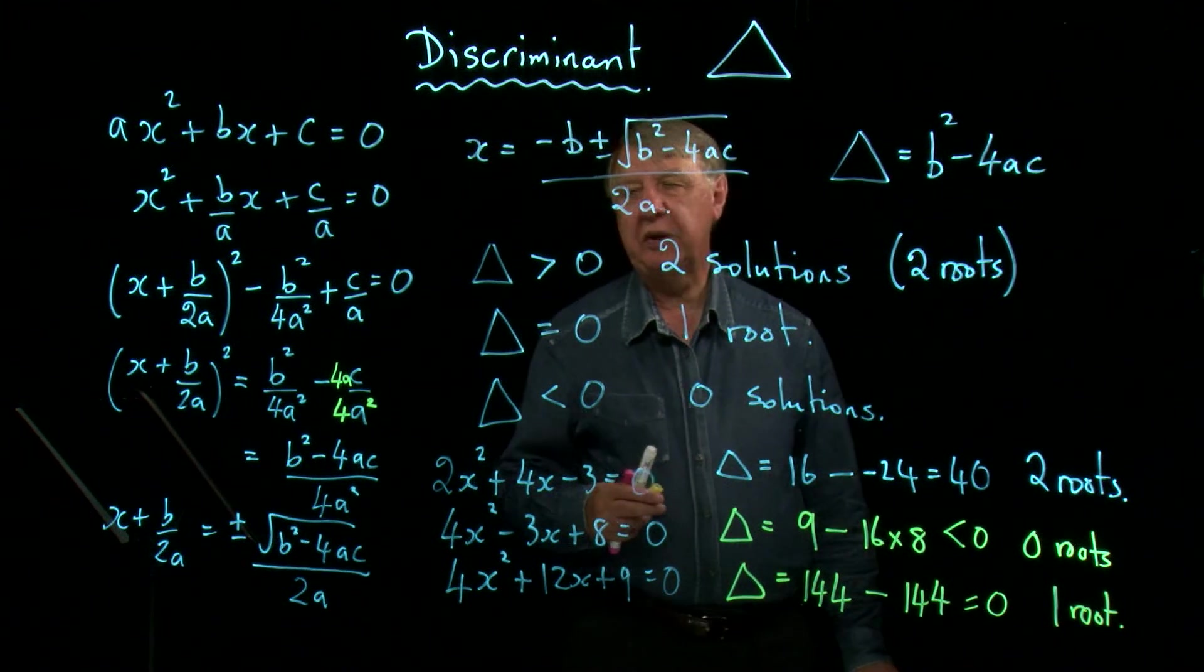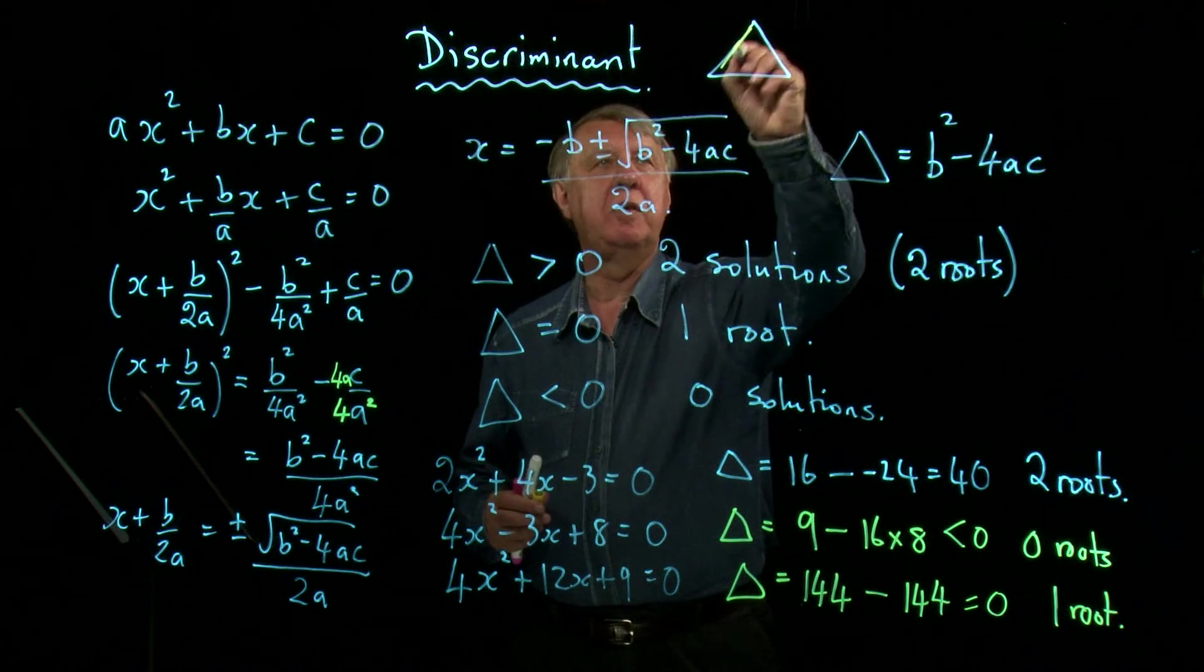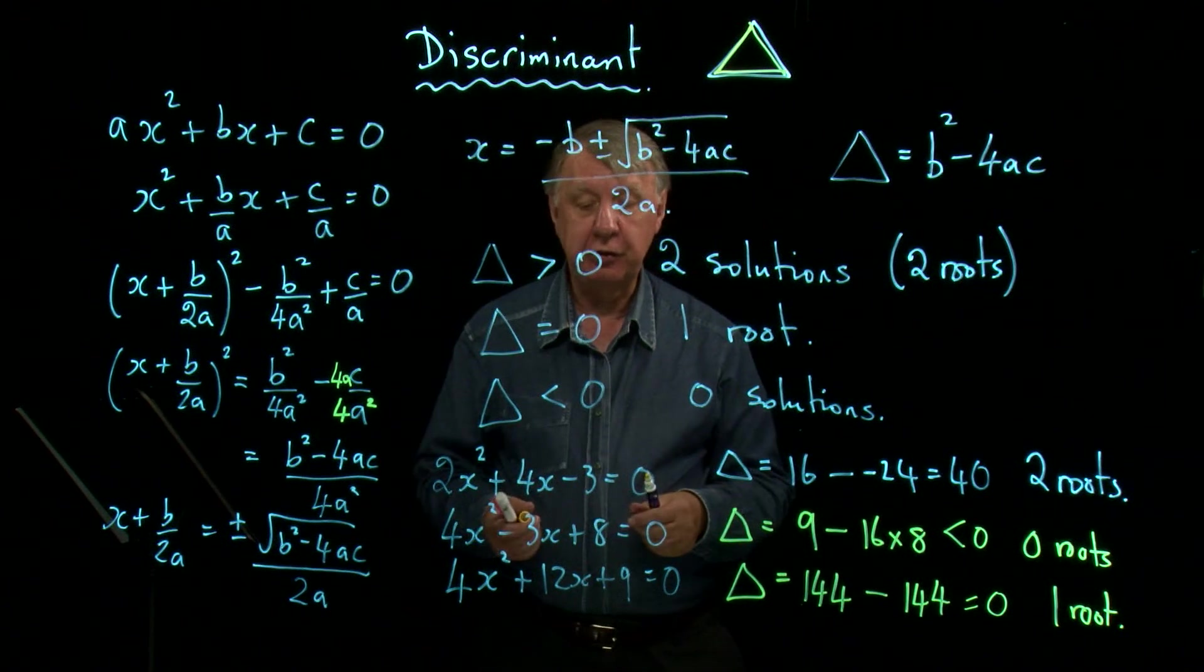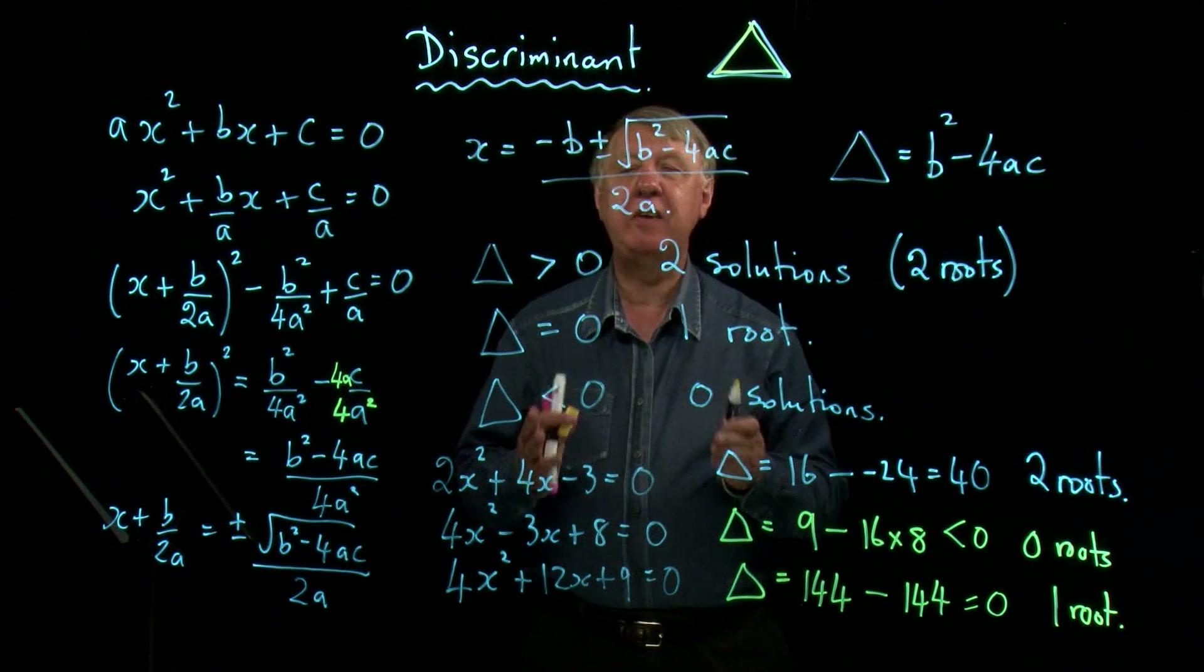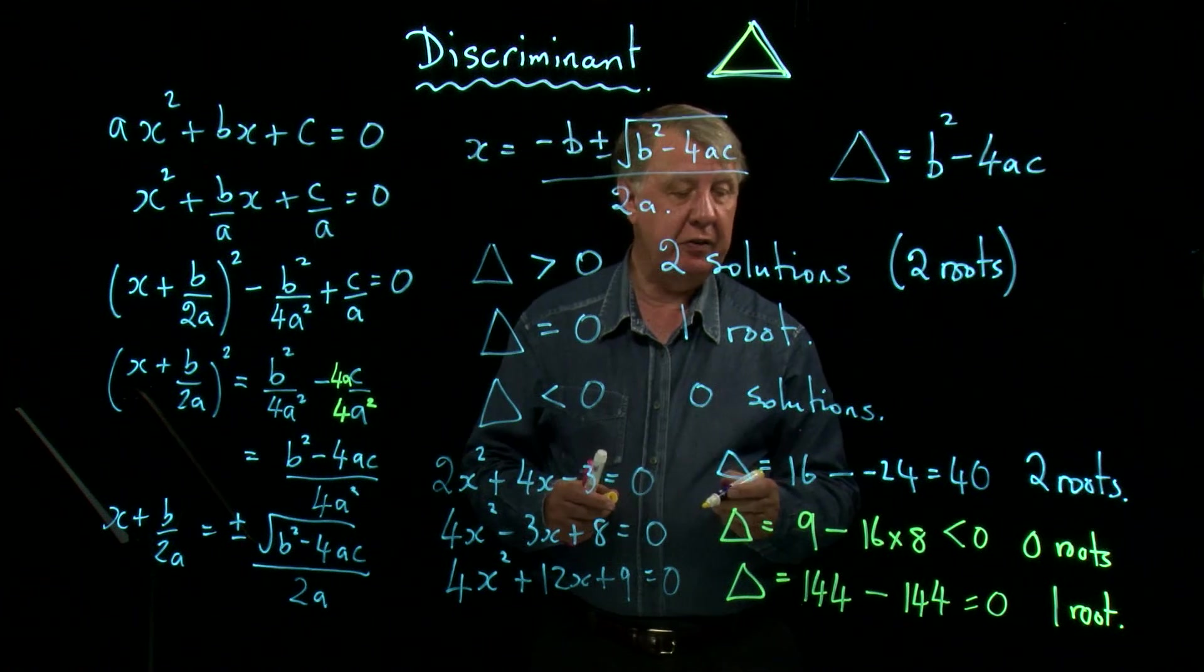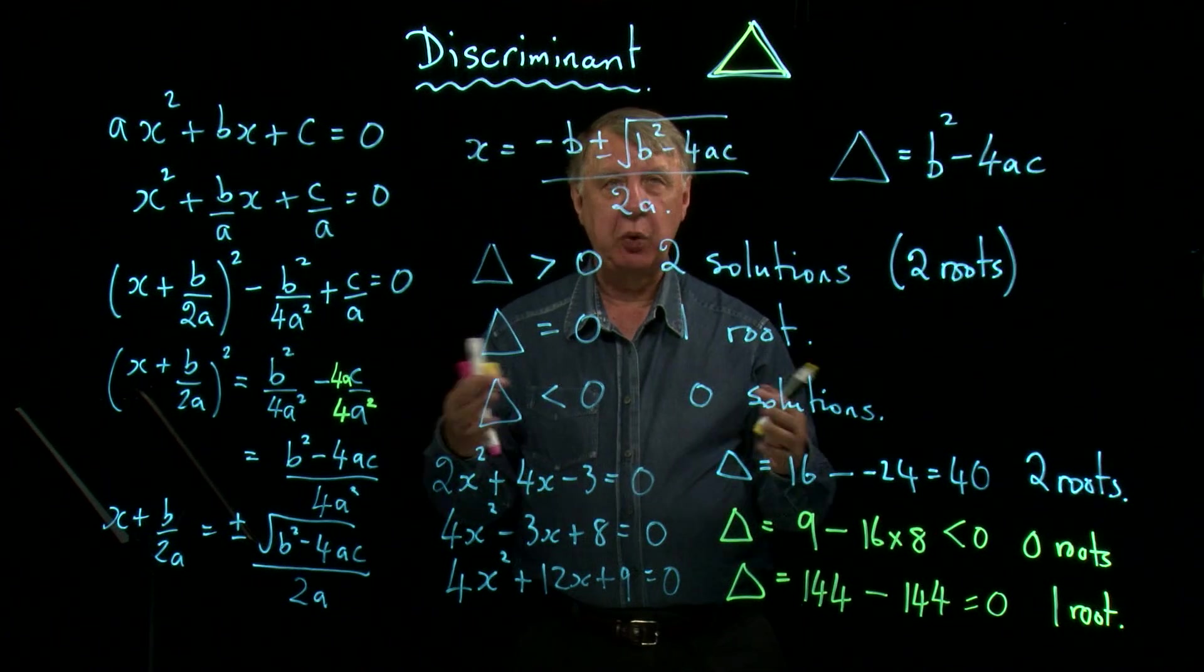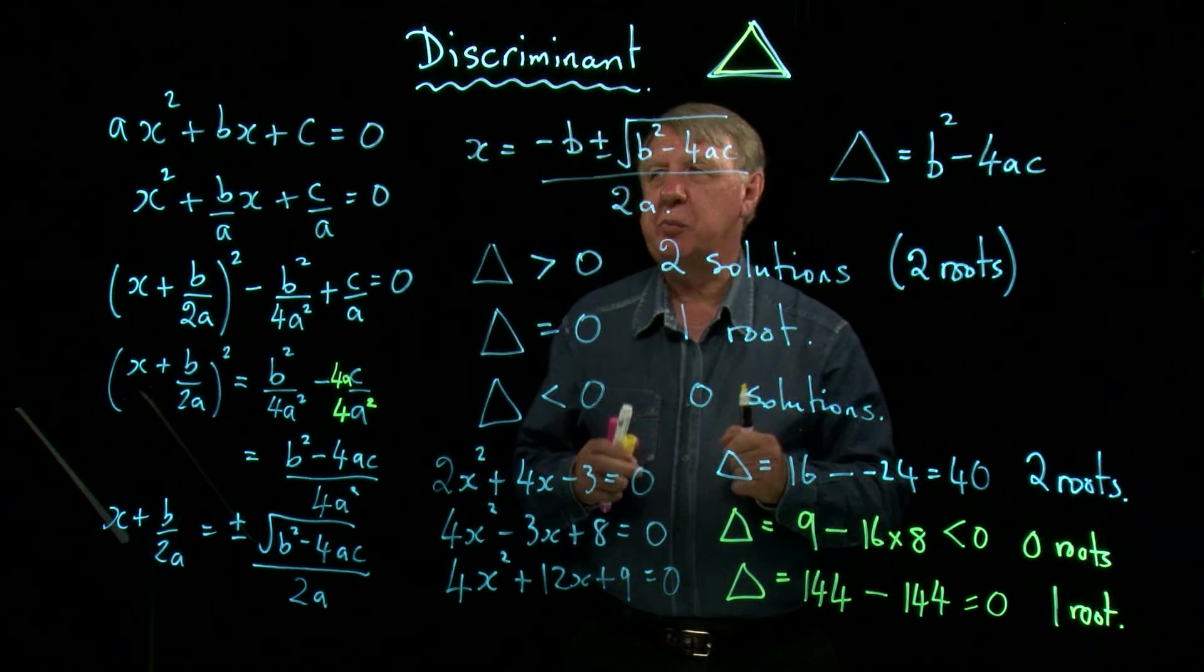So this equation only has one root. So there we can see then the power of this quantity, the discriminant, helps us determine the nature of the solutions of a quadratic equation. And it's a very, very popular topic in the exam. And in the next lesson, we'll look at how they make the question around this sort of idea just that little bit more tricky.